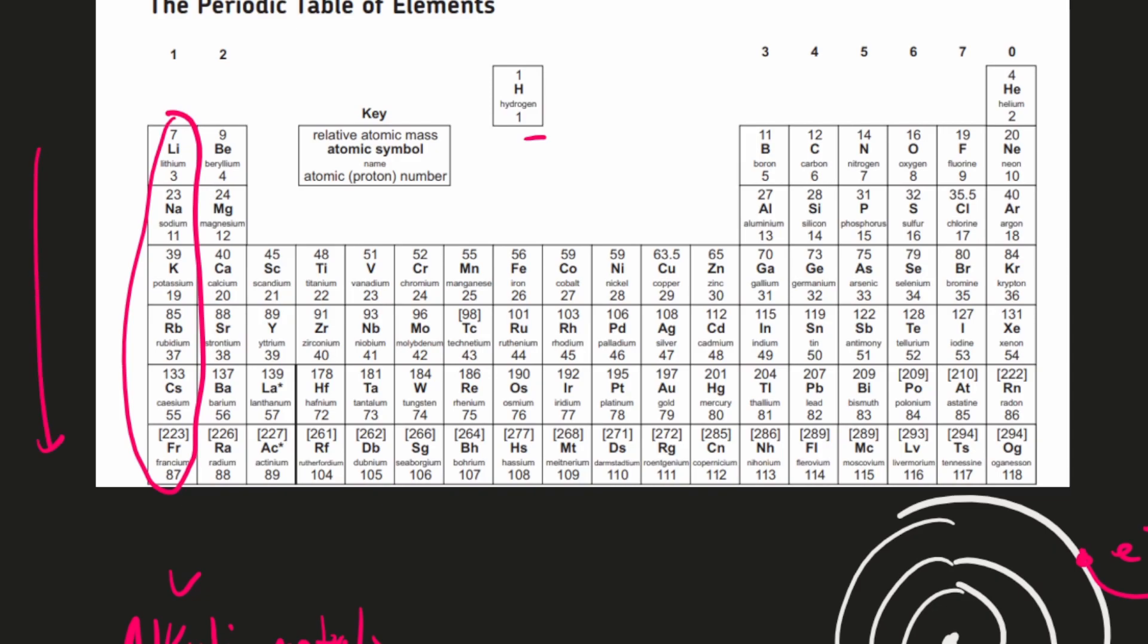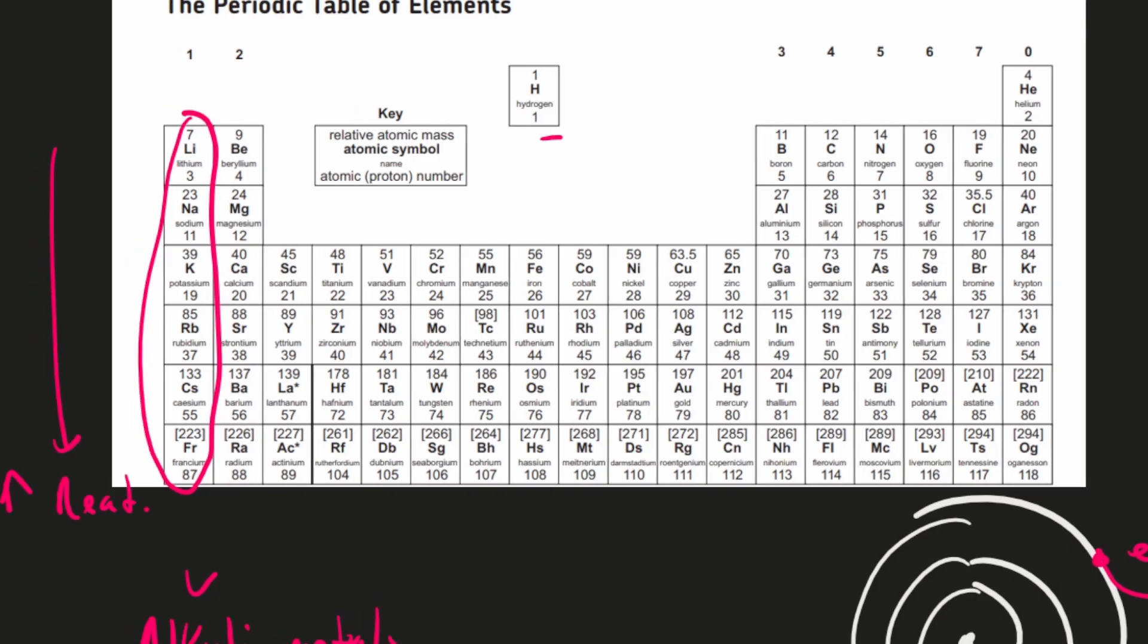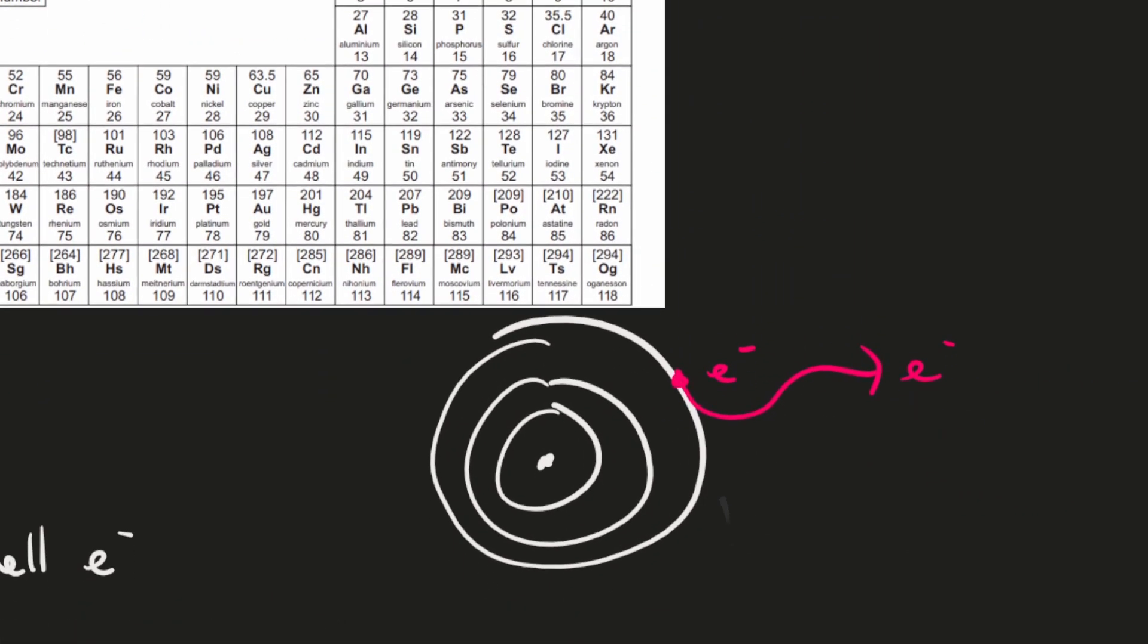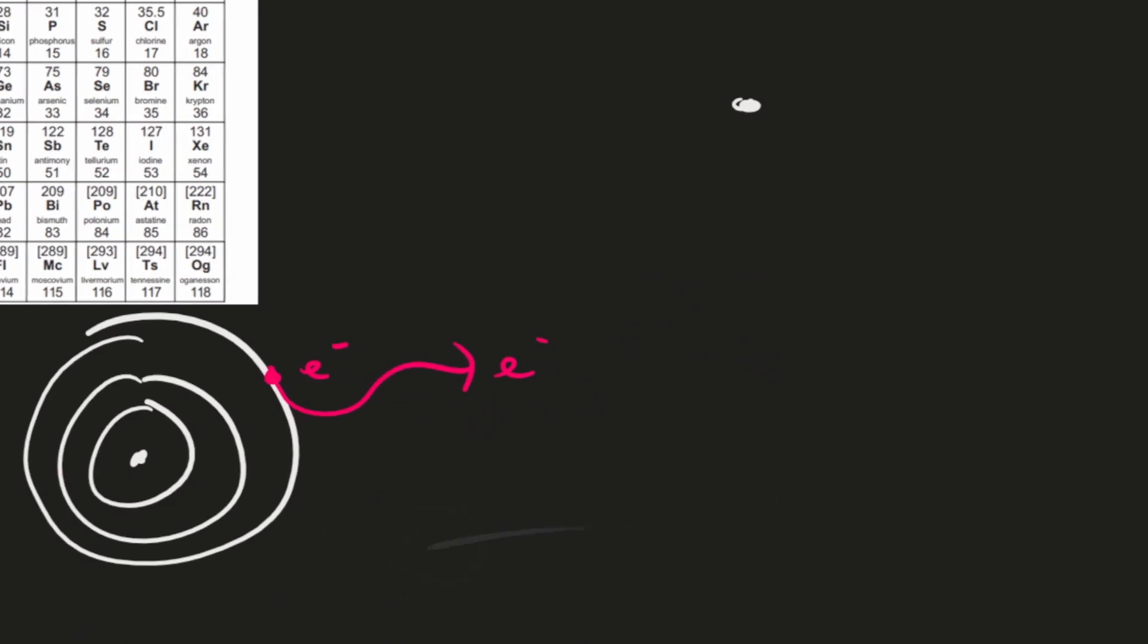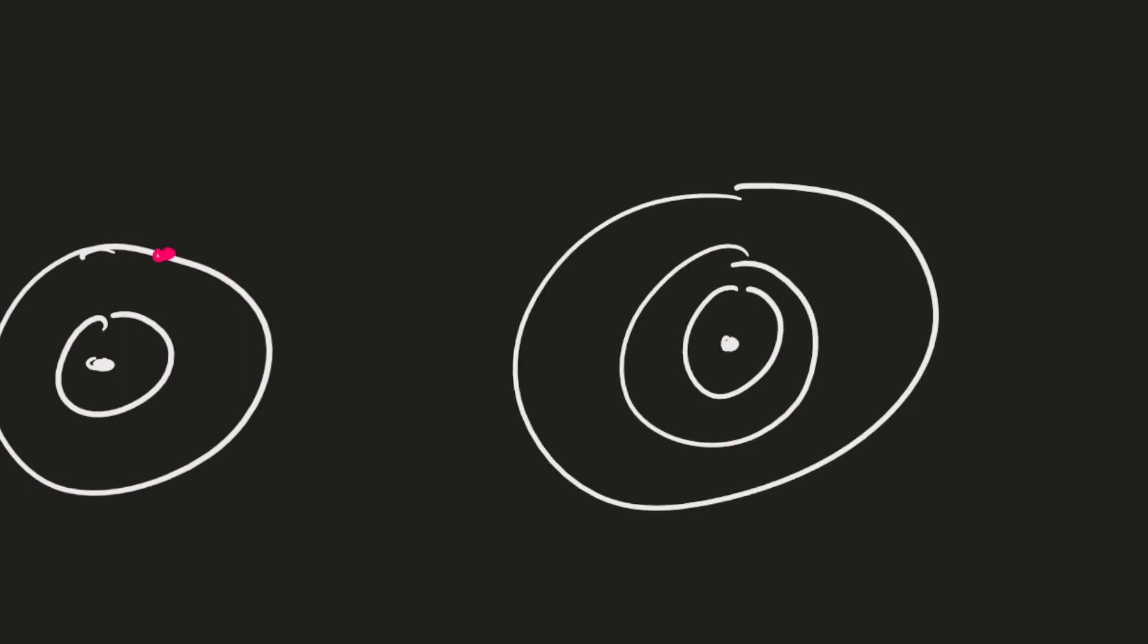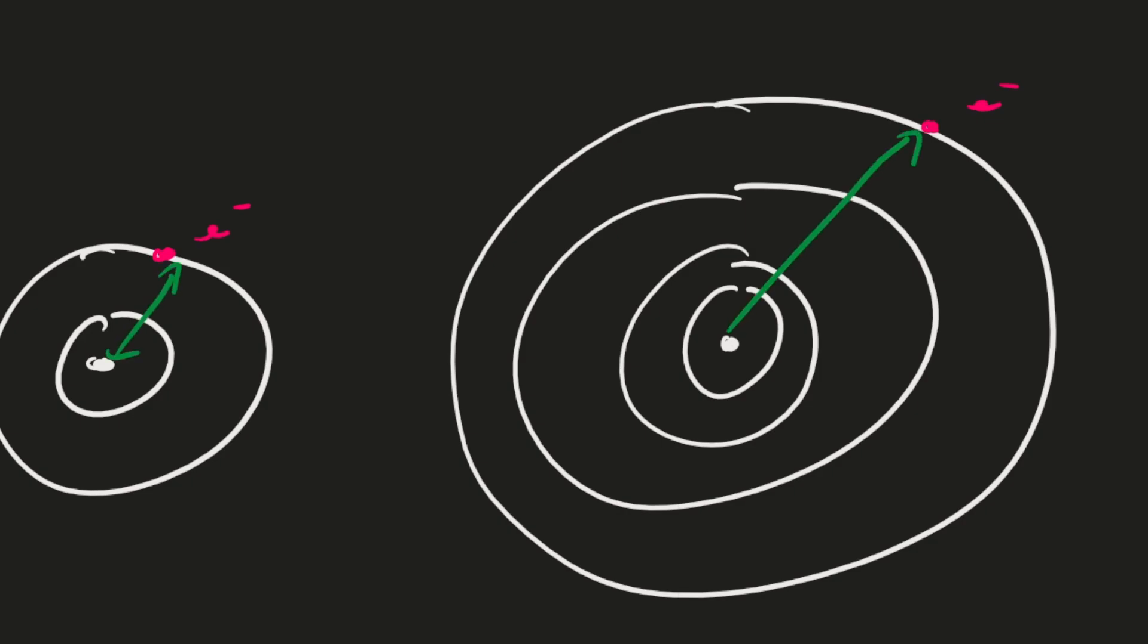As you go down the group, the reactivity actually increases. The reason for that is this electron is held less strongly as you go down the group, because the period number increases and the period number is linked to the number of energy levels in the atom. If you have an element in period 2, you'd have two shells and one outer shell electron. But if instead you have this element in period 4, you'd have one, two, three, four energy levels. The outer shell electron here is much further away than it is over here. As this distance increases, it becomes easier and easier to lose this electron.